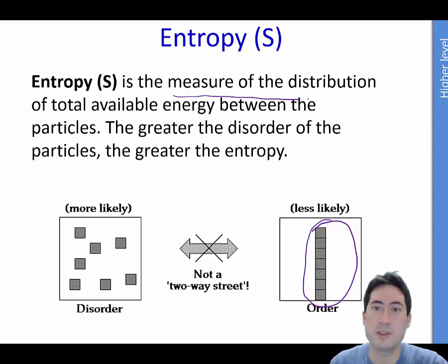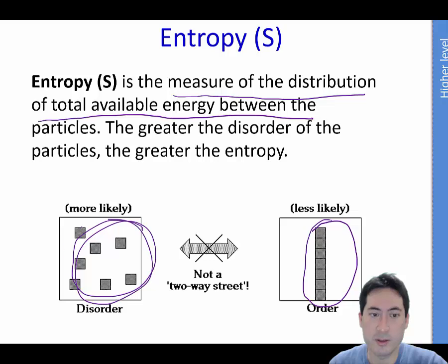The IB definition here is the measure of distribution of total available energy between particles. So the greater the disorder here, the greater the entropy. It's a degree of randomness, a degree of disorder.